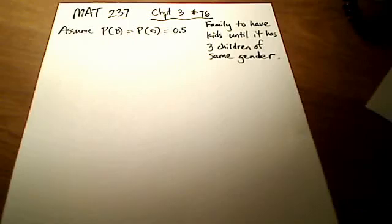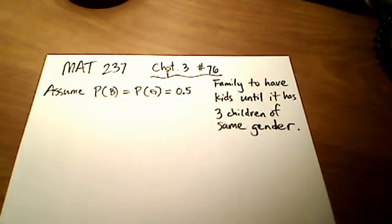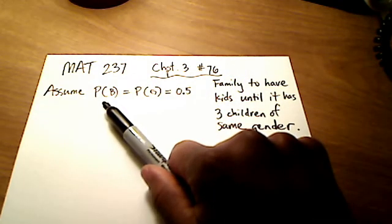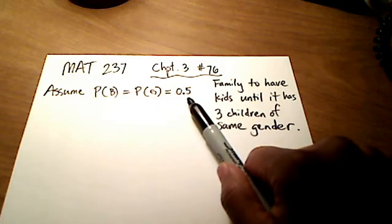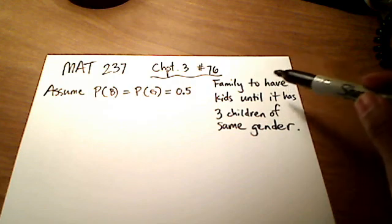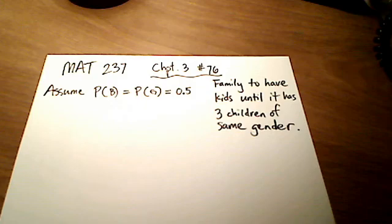This is chapter 3, question number 76. The question states: a family decides to have children until it has three children of the exact same gender. We're assuming the probability of having a boy is the same as the probability of having a girl, both fifty percent. The family keeps having kids until it has three children of the same gender.